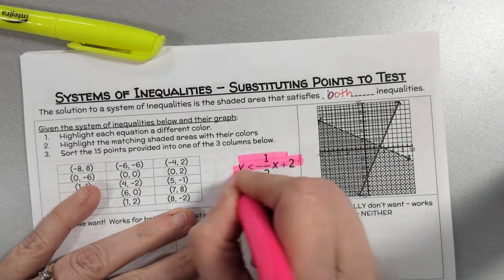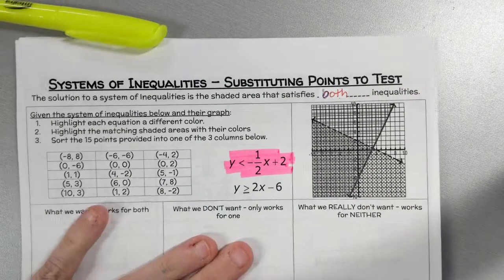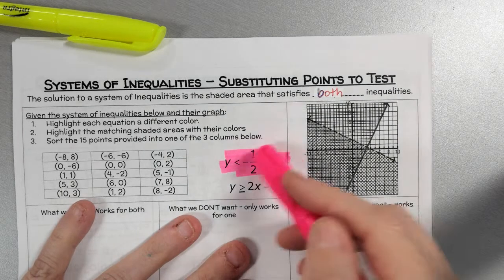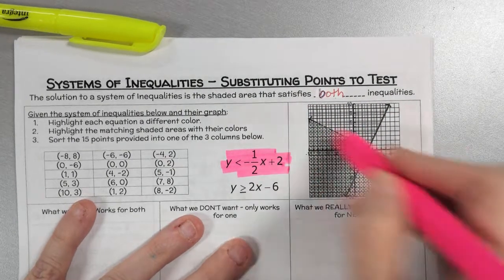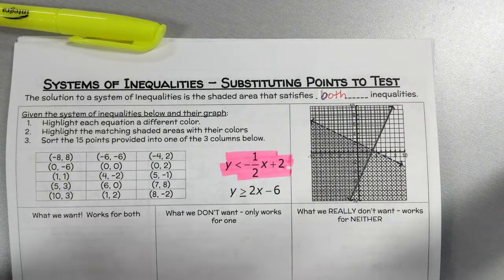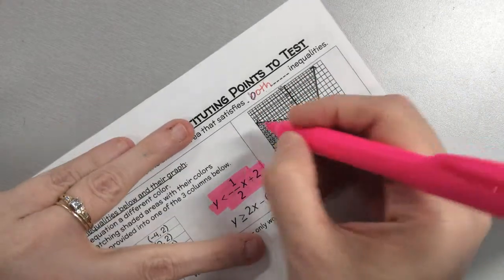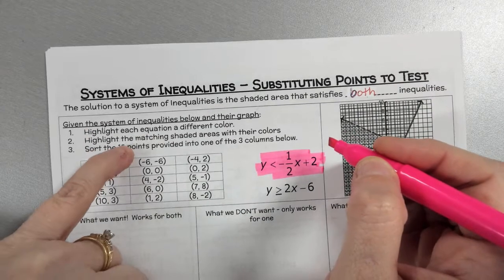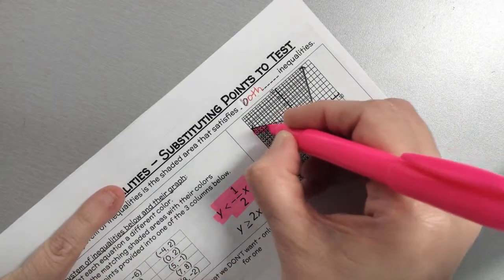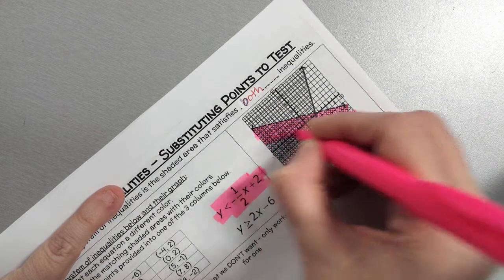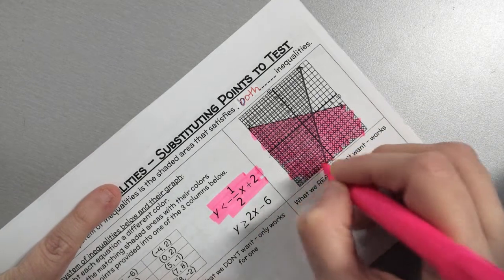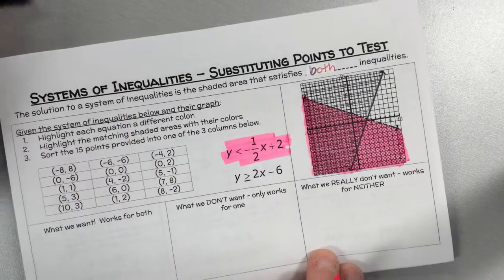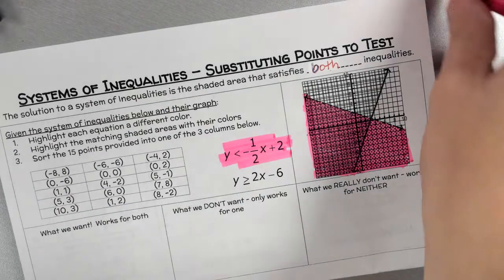The first inequality is y less than negative one-half x plus two. I know about inequalities that if the slope is negative, the line goes downhill. The slope on this one is positive, so it's going uphill — that's the line going up. So I know this one corresponds to less than negative one-half x plus two. I'm going to highlight the equation and then shade it that color. I'm a huge fan of shading it all — it's like a little freebie coloring break.